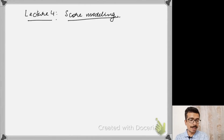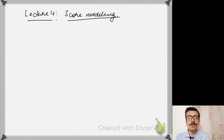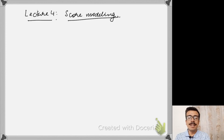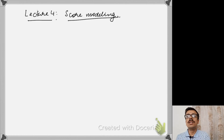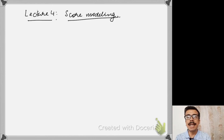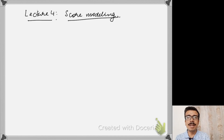Hello everyone. I am Dheeraj and welcome to Lecture 4 of this course on diffusion models. Today we will be looking at score-based modeling. You might find this to be a slight deviation from the topics we have been looking at. However, later we will see that score-based modeling connects back to diffusion models, and also to stochastic differential equations — all three get connected together. In today's class we will look at the basic ideas of score-based modeling.